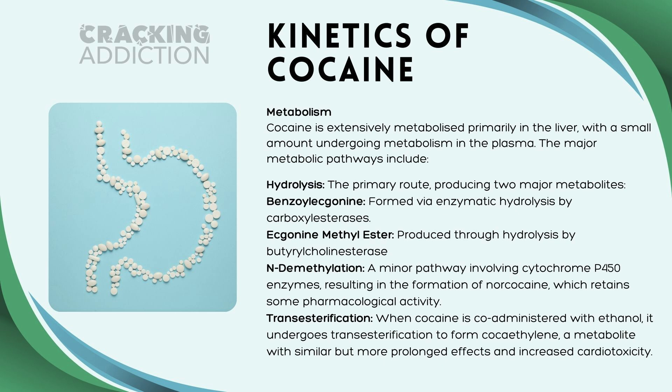We've got absorption and distribution. Next comes metabolism. Cocaine is extensively metabolized, primarily in the liver, with a small amount undergoing metabolism in plasma. The major metabolic pathways include the following. Firstly, we have hydrolysis — this is the primary route of metabolism of cocaine, and hydrolysis produces two major metabolites.